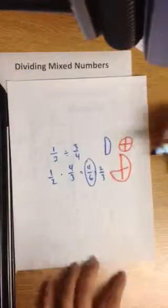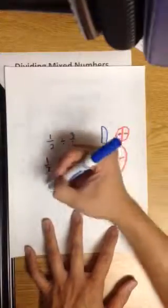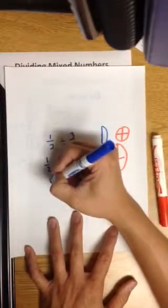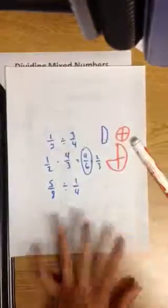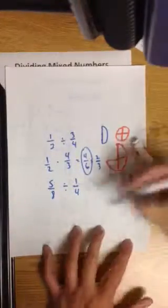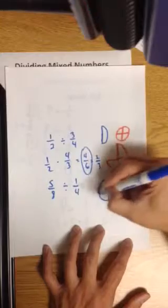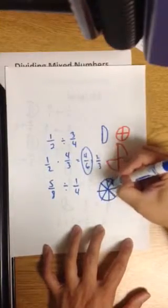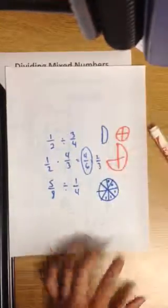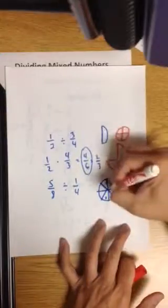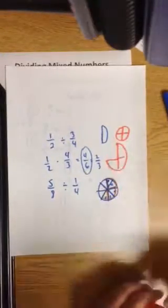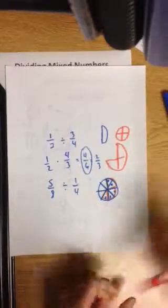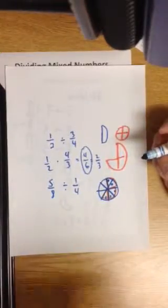So let's try another example. Here's our last example. Let's do 5 eighths. How many 1 fourths are there in 5 eighths? So 5 eighths looks like this. 1, 2, 3, 4, 5. How many fourths are there? There's 1 right here, 2 right here. I think it's 2 and a half if I have to predict. Dividing fractions. Give it a try. Flip the second fraction.